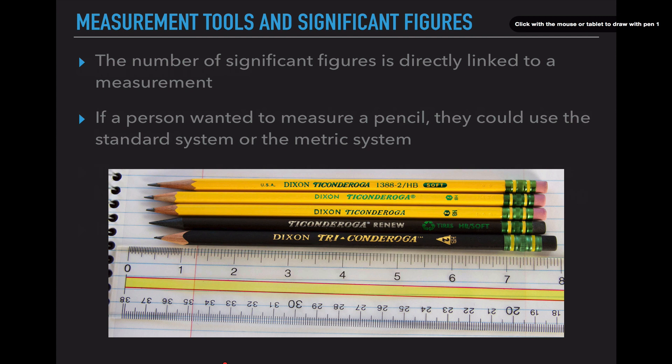If a person wanted to measure a pencil, they could use the standard system that we use in the US — inches or feet — or they could use the metric system, which the rest of the world uses, which is centimeters or meters. Looking at this picture, we can see that each of these pencils starts over here and ends on this end. I know they're not starting at zero, but I'm still going to use this ruler to explain some things.